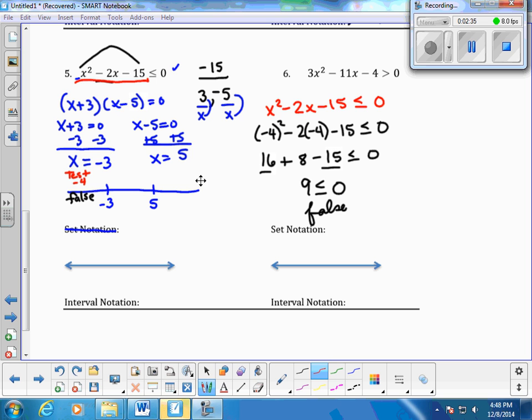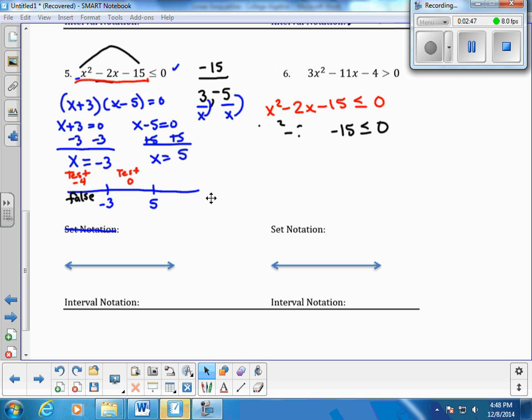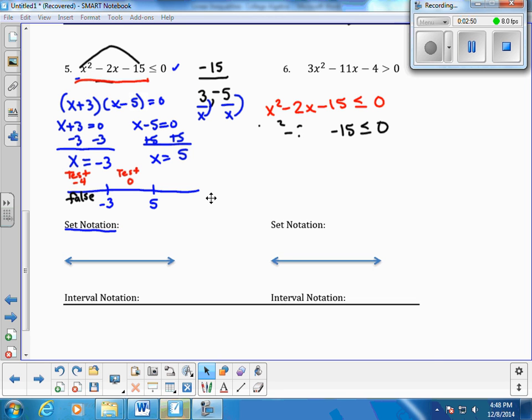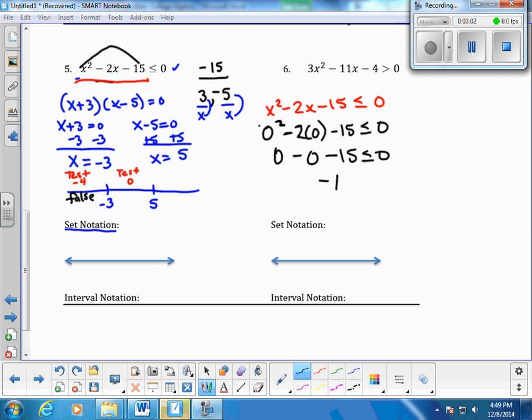I need to test this region. Well, the easiest number to test between a negative number and a positive number is 0. So, if I came over here and in my original function, I tested 0. 0 squared minus 2 times 0, minus 15. Everywhere there is an x, I plug in a 0. This gives me 0, minus 0, minus 15. And it says, negative 15 is less than or equal to 0. Yes, a negative number is less than 0. This was true.